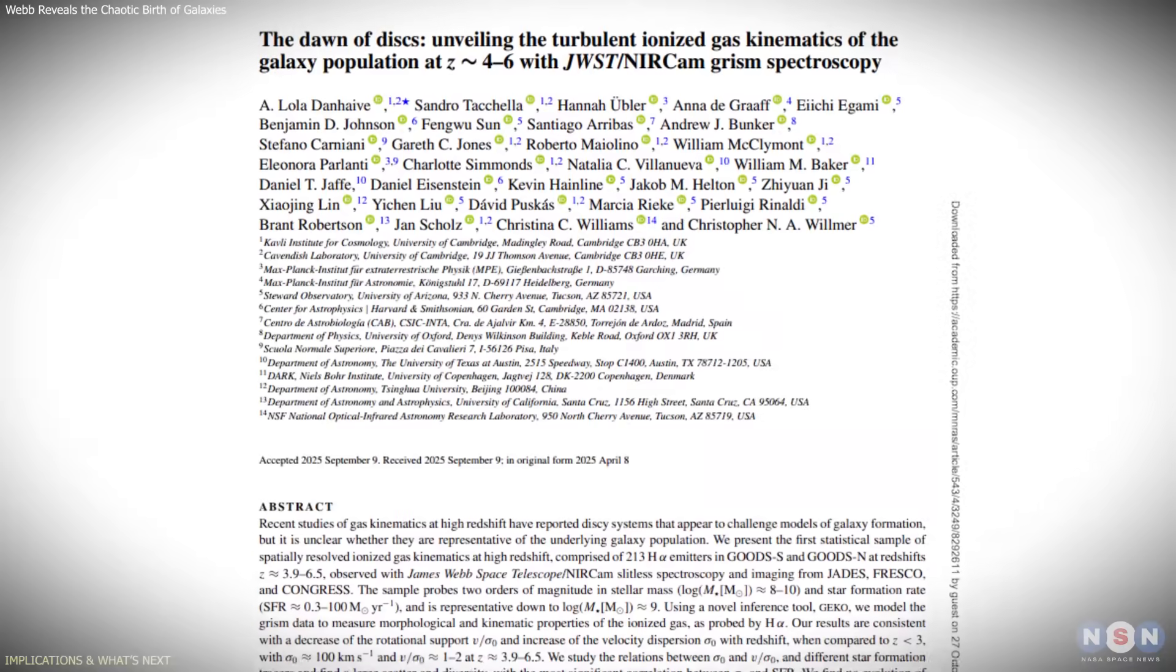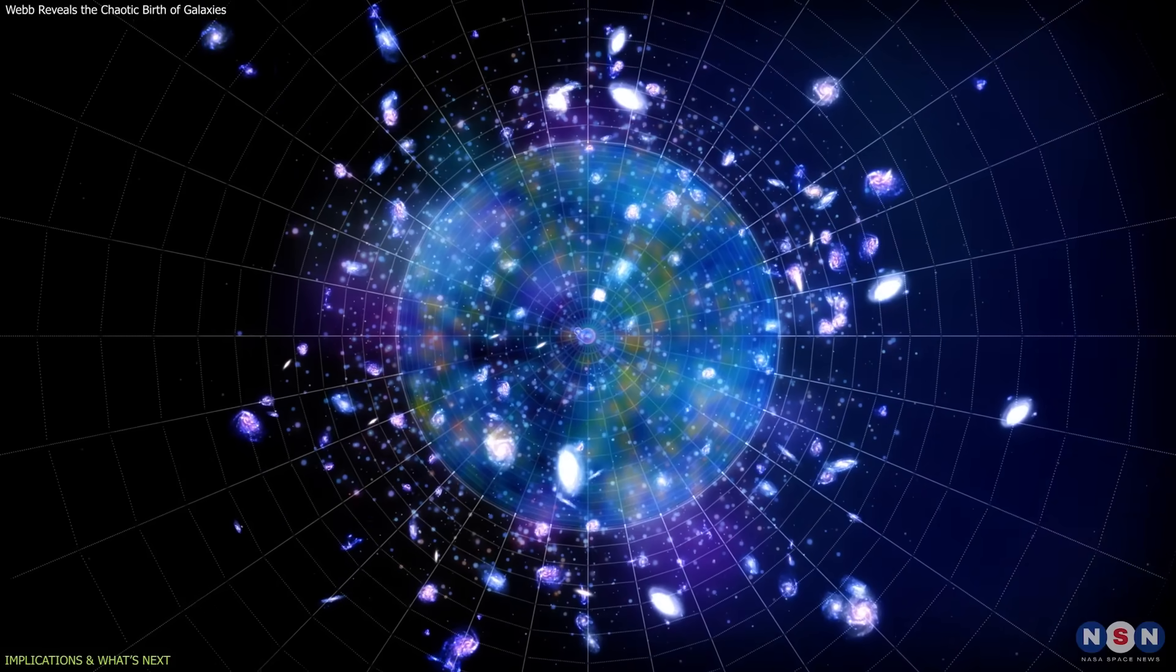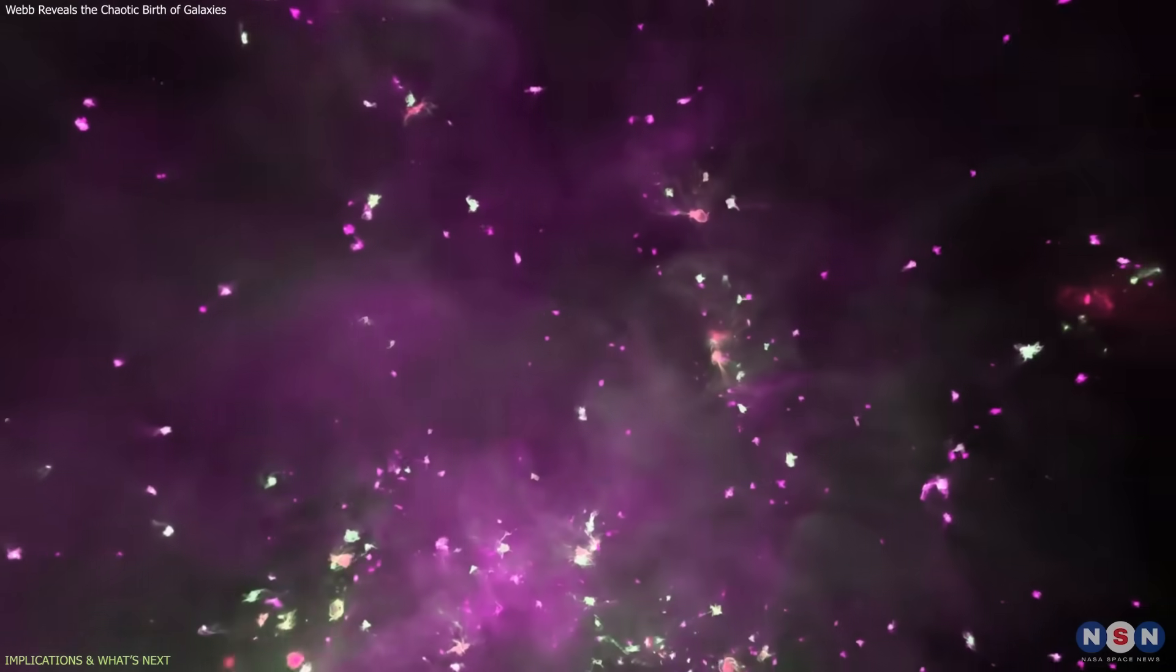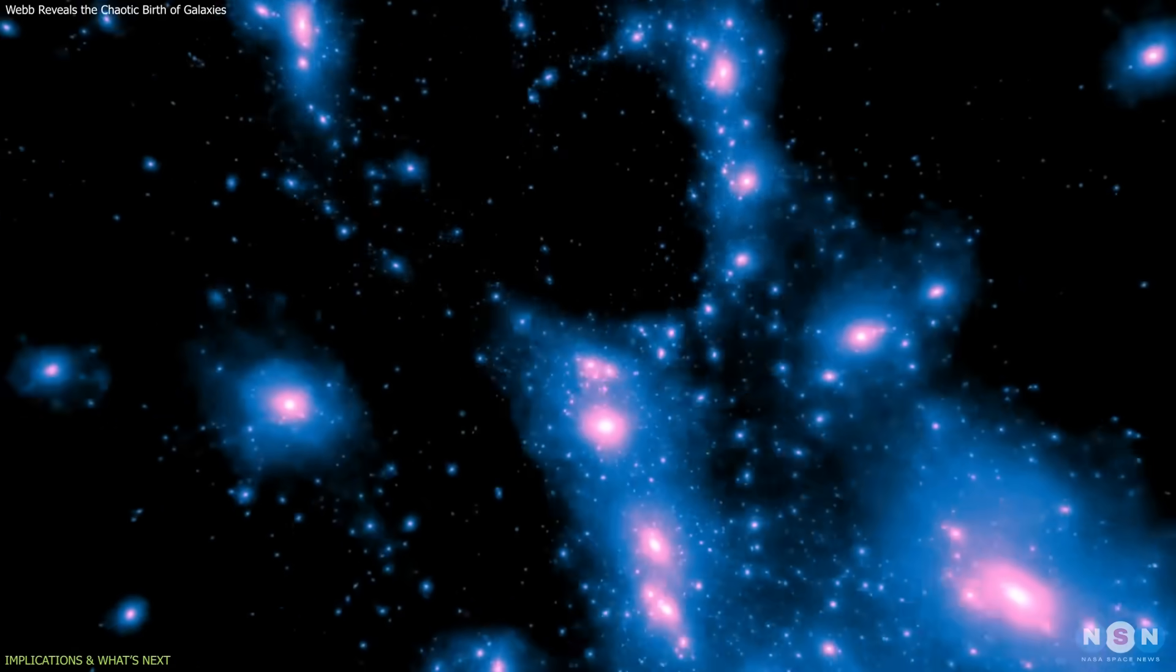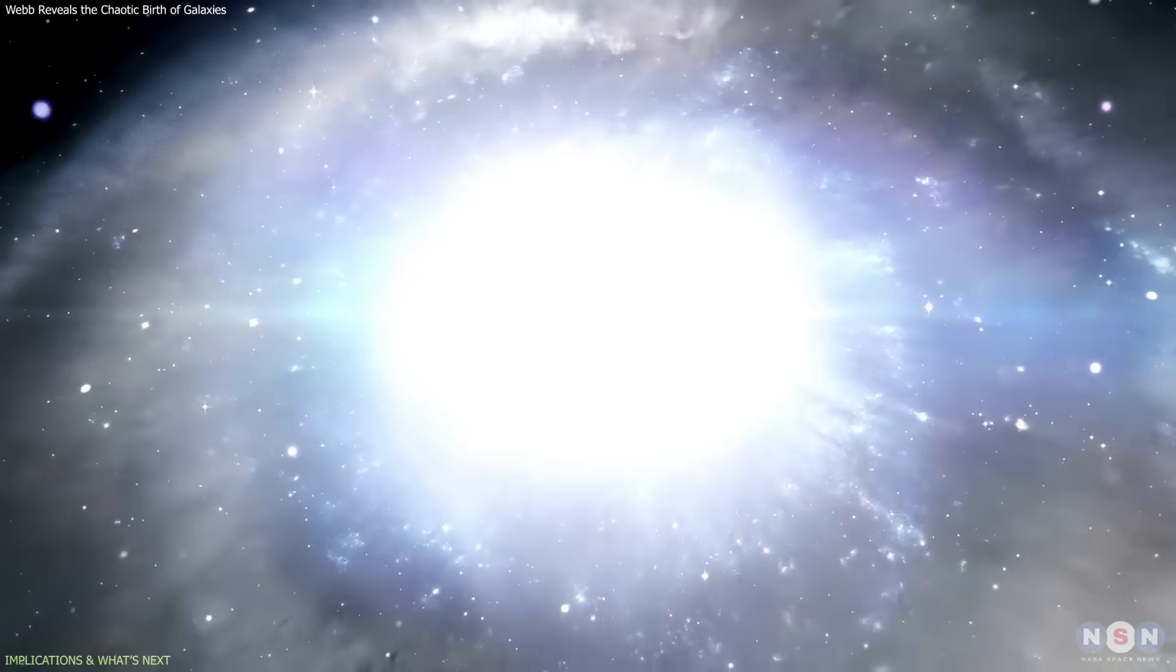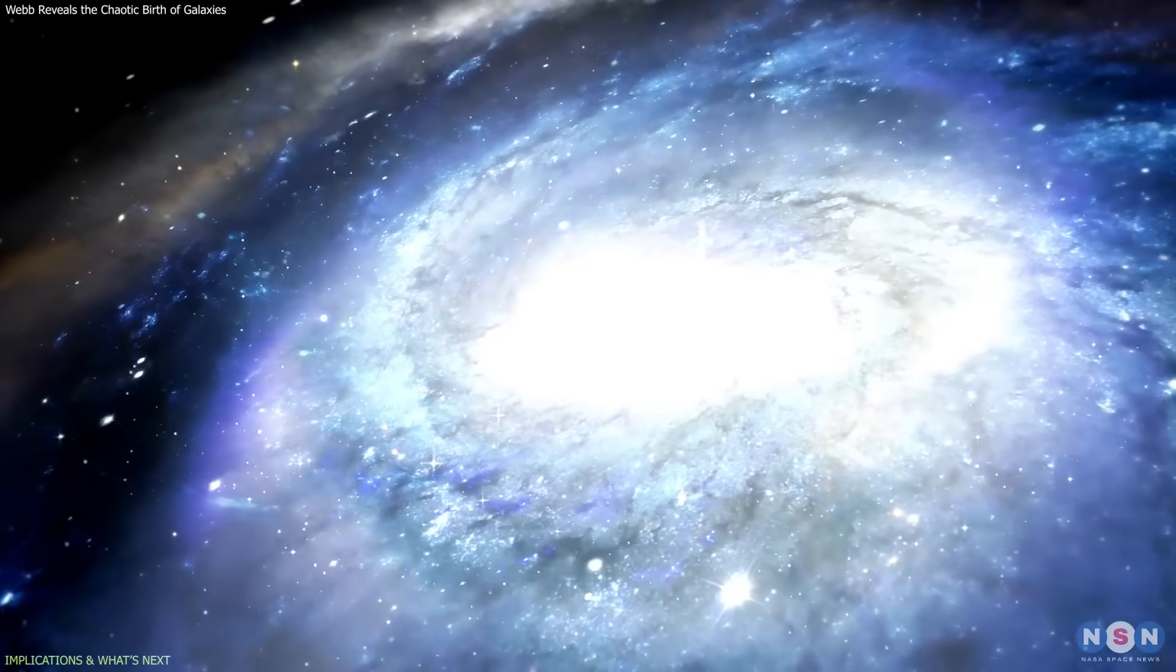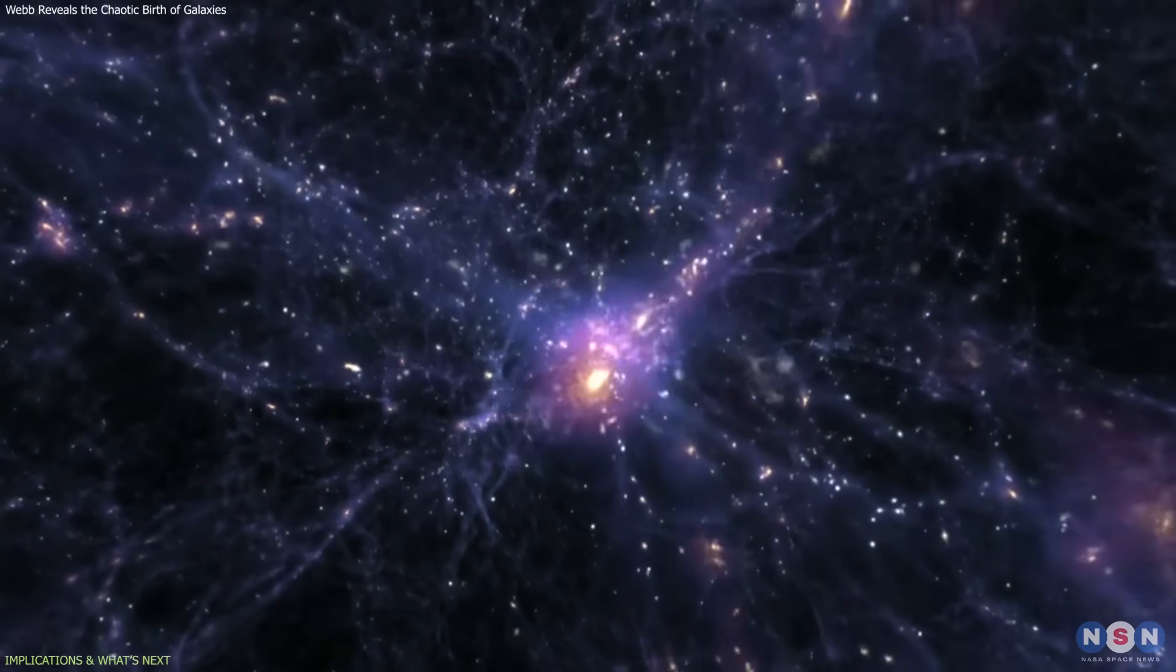The implications of this discovery extend far beyond these specific galaxies. First, refining galaxy evolution models. Models of galaxy formation will need to account for a longer period of instability in the early universe. The idea that early galaxies quickly spun into orderly disks doesn't hold up statistically. Turbulence, mergers, and feedback were dominant processes for a significant stretch of cosmic time.